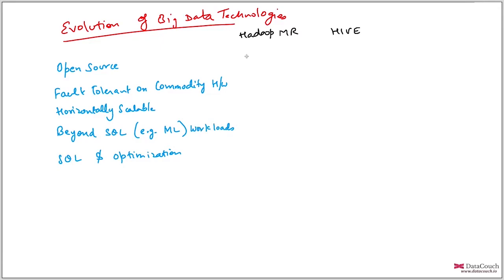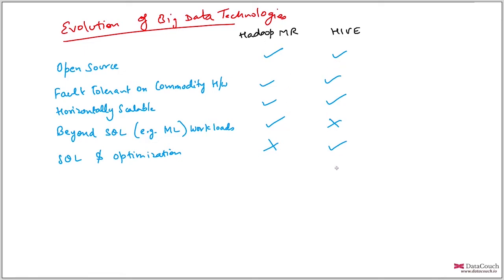Hadoop MapReduce offered open source, fault tolerant, commodity hardware, horizontal scalability, and workloads beyond SQL, but SQL and optimization were not there. Hive is also open source, fault tolerant, horizontally scalable, but beyond SQL Hive cannot do. However, Hive does provide SQL and optimization — it is a wrapper created over MapReduce. You don't have to write Java code; you write HQL (Hive Query Language) and under the hood it converts into MapReduce jobs. But Hive is limited to the SQL ecosystem only.